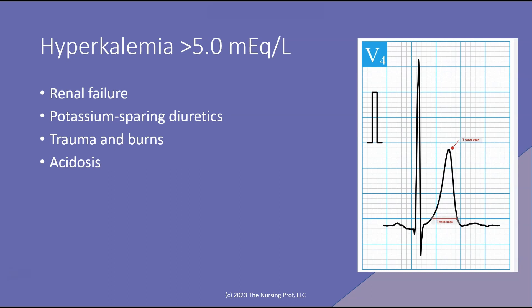Now let's look at the opposite situation: hyperkalemia, which is a potassium level greater than 5 milliequivalents per liter. This typically happens with renal failure. As mentioned, if you have good renal function, there's no reason your potassium level should get high even with high oral intake. Potassium-sparing diuretics can keep the kidneys from dumping excess potassium. Trauma and burns release potassium from inside cells into the bloodstream, since potassium is an intracellular ion. Acidosis can also cause problems with hyperkalemia.